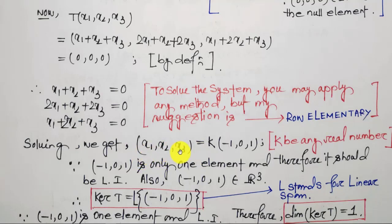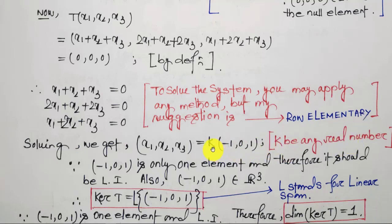The result is (x1, x2, x3) = K(-1, 0, 1), meaning the system has infinitely many solutions where K is any real number. If K = 0 the result is (0,0,0); if K = 1 the result is (-1,0,1); if K = 2 the result is (-2,0,2), and so on.